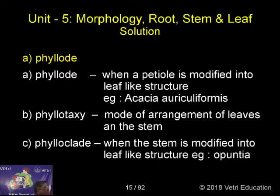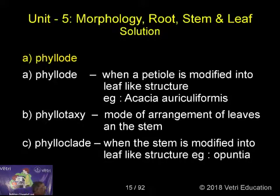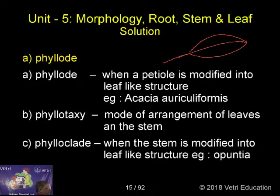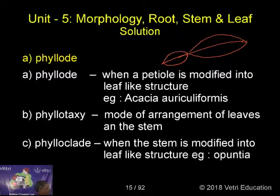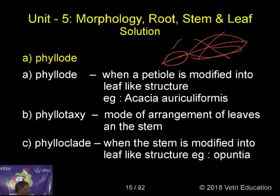Generally, when a leaf is modified into a structure, that is called a phyllode. When the petiole is modified into a leaf-like structure, that is called the phyllode. Example: Acacia auriculiformis. Gradually, the lamina is removed, and this structure looks like a leaf — this is called a phyllode.